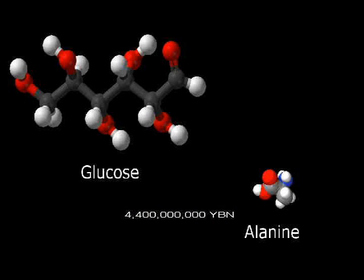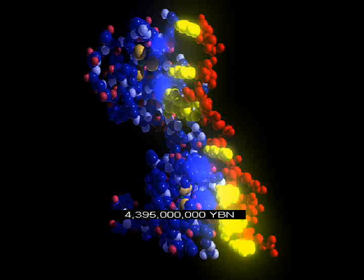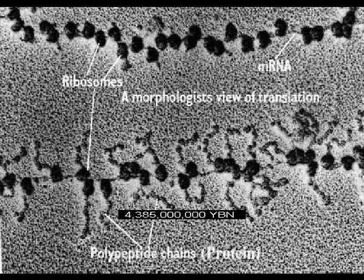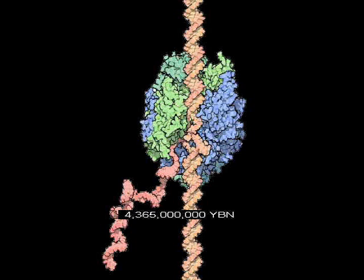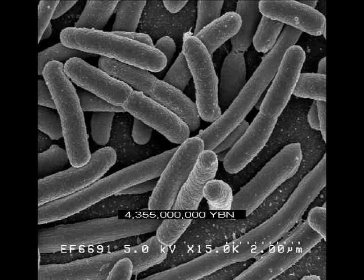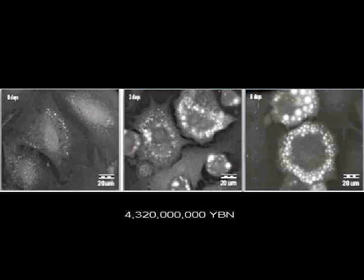Larger molecules form on Earth like amino acids and sugars. Nucleic acids form or arrive on Earth. RNA assembles amino acids into the first proteins. A protein copies nucleic acids. The first cell on Earth — a bacterium. DNA is surrounded by proteins. The first virus.